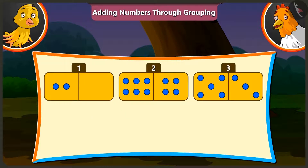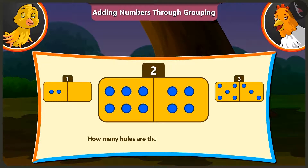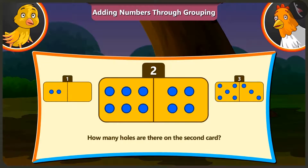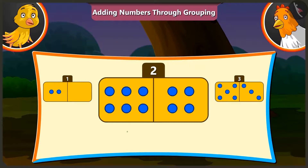Well done, Pilu. Now tell me the number of holes on the second card. The second card has 6 and 4 holes. If we add 4 to 6, we get 10 holes.